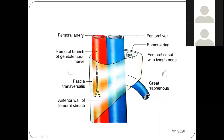Three compartments of the femoral sheath: medial, intermediate, and lateral. What is the other term for the medial-most compartment of the femoral sheath? It is called the femoral canal. It has clinical significance. We will discuss its boundaries — how it is formed anteriorly and posteriorly. What is the composition of the medial-most compartment?